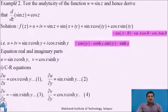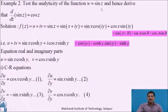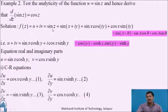Now let us consider Example 2: test the analyticity of the function w = sin z and hence derive that the derivative of sin z is cos z. Solution: let f(z) = sin z, which has the general form u + iv. Since z = x + iy, we write sin z as sin(x + iy).